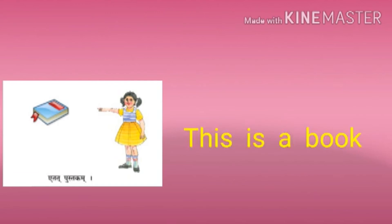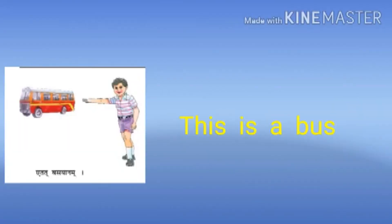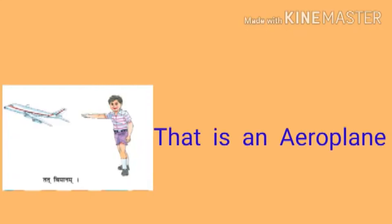The next Napunsakalinga Ekavachnam word is Idat Pushtakam — this is a book. The next one is Tat Chitram — it is a picture. Then Idat Basyanam — this is a bus. The last Napunsakalinga Ekavachnam word is Tat Vimanam — it is an aeroplane. Idat and Tat are the two words belonging to Napunsakalinga Ekavachnam.